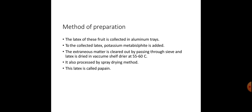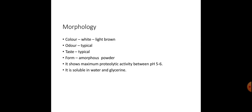Method of preparation: the latex of these fruits is collected in aluminium trays. Potassium metabisulphite is added to the collected latex and extraneous matter is cleared by passing through a sieve. The latex is dried in a vacuum shelf-dryer at 55 to 60 degrees Celsius, or processed by spray drying. This dried latex is called papain. Morphology: color white or light brown, odor typical, taste typical, form amorphous powder.